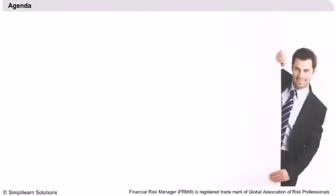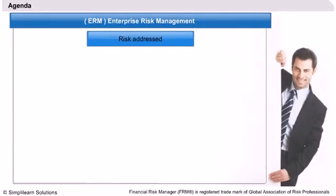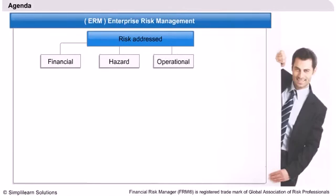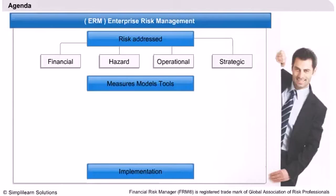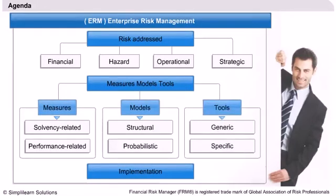Agenda: We will cover the lecture in three parts. After having a brief idea about enterprise risk management, we will see the various types of risks that are addressed by ERM, such as financial risk, hazard risk, operational risk, and strategic risk. Then we will proceed to learn about the measures, models, and tools used in the ERM framework. Finally, we will look into the various practical considerations in implementing ERM.